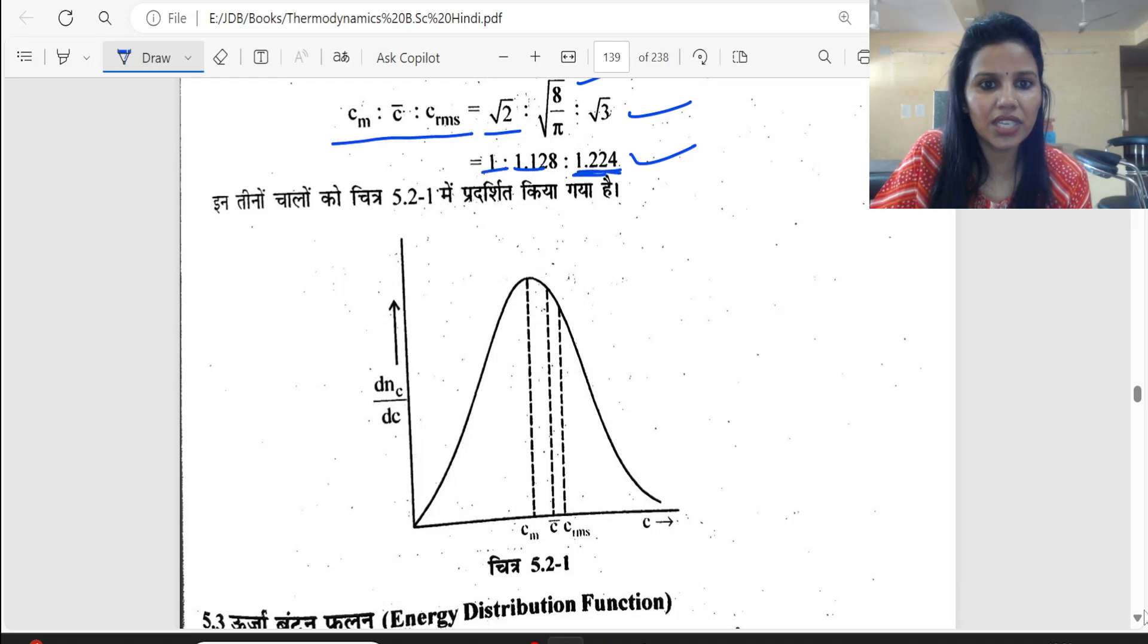If we plot these in a graph, which has the highest value? This value is 1.2, this is 1.1, and this is 1. So 1.2, which is C rms, has the highest value. So C rms will be last in the graph, ahead. In the middle you will have C bar, and lowest will be most probable.